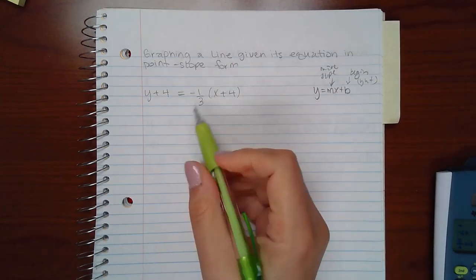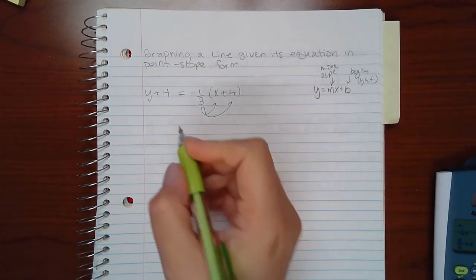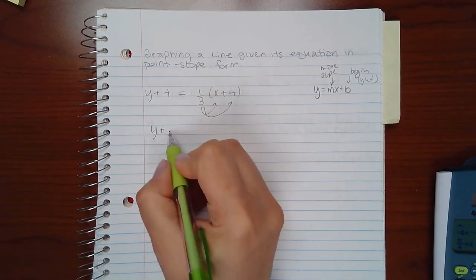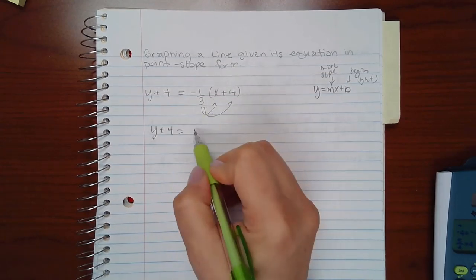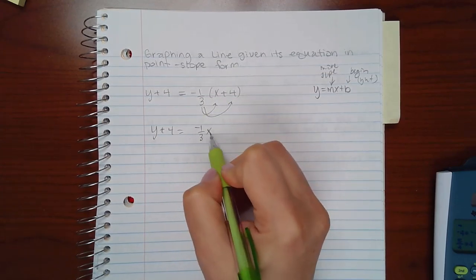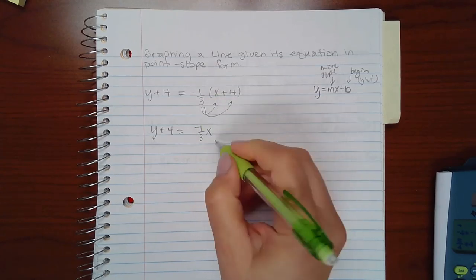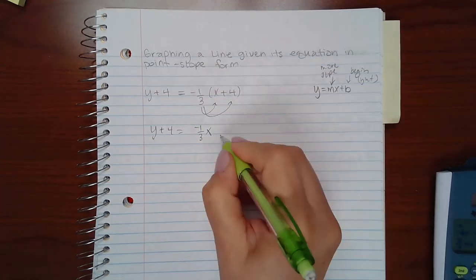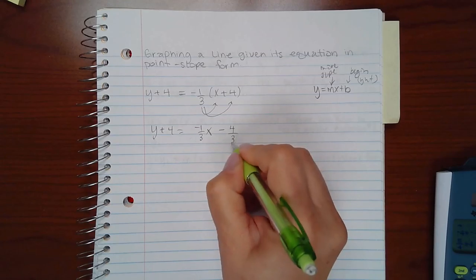So in order to do that, the first thing we need to do is distribute this negative one-third. So negative one-third times x is negative one-third x. Negative one-third times positive 4, if you use your calculator, you will get negative four-thirds.